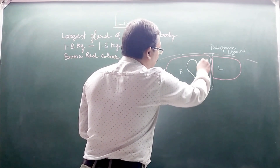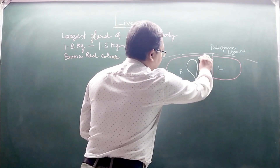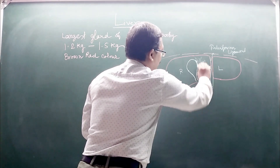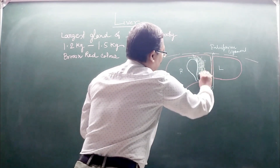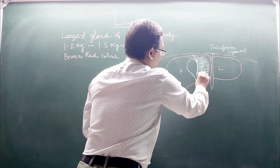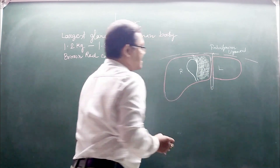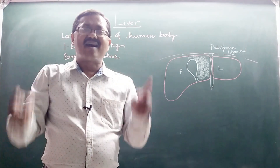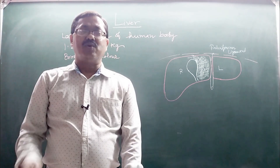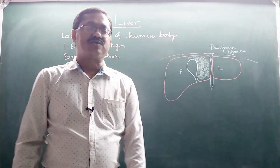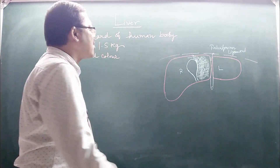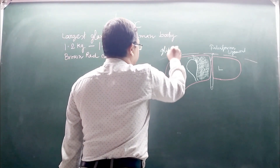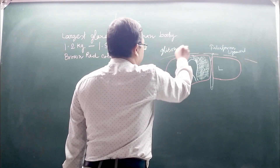The gallbladder is guarded by the quadrate lobe, which is present on one side of the liver. Some cords of cells within the liver are covered by a connective tissue called Glisson's capsule.